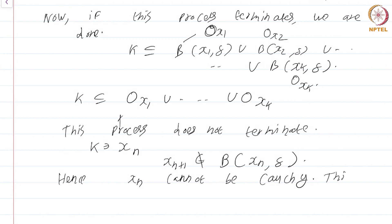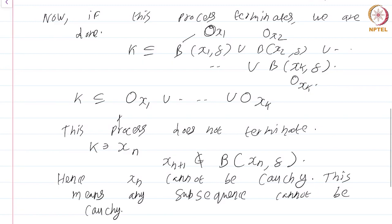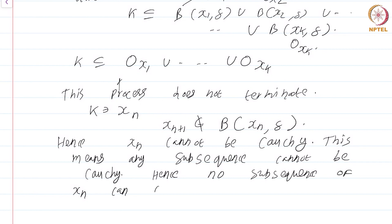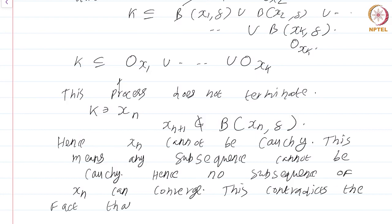Hence x_n cannot be Cauchy, for this choice of delta: x_{n+1} and x_n can never be delta-close, by the very way we chose x_n. This means not only can x_n not be Cauchy, but any subsequence cannot be Cauchy as well — because any given term of the sequence is at least delta distance away from all prior terms. Hence no subsequence of x_n can converge, which contradicts the fact that K is compact. Compact means any sequence must have a convergent subsequence, but we have just found a sequence with no convergent subsequence.